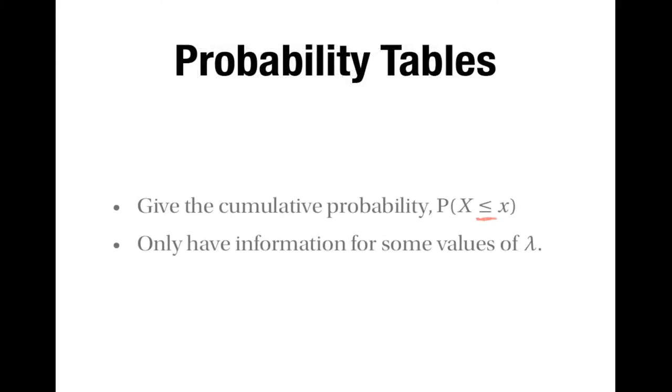In particular, they give the cumulative probabilities, the probability that x is less than or equal to something, and they only have information for some values of lambda.